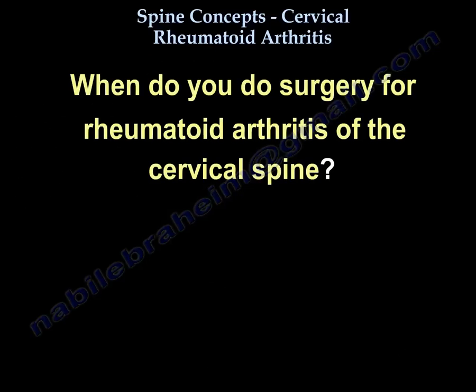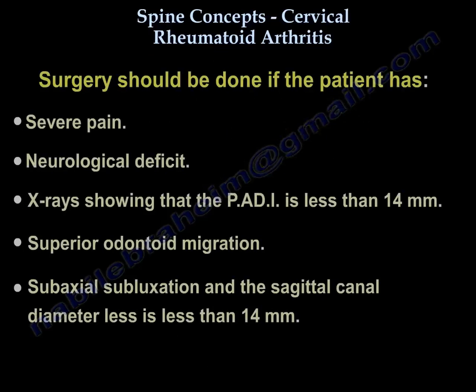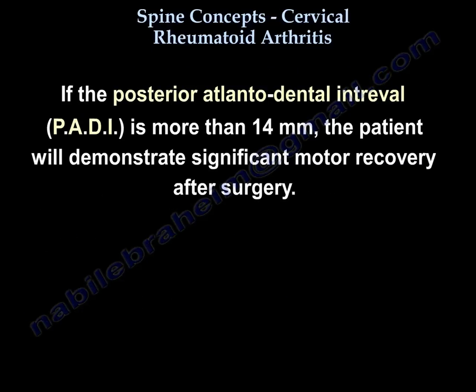Surgery in rheumatoid arthritis is indicated for severe pain or neurological deficit, when the posterior atlanto-dens interval is less than 14 mm, when there is superior odontoid migration, or when subaxial subluxation with a sagittal canal diameter is less than 14 mm. If the posterior atlanto-dens interval is more than 14 mm, the patient will demonstrate significant motor recovery after surgery.